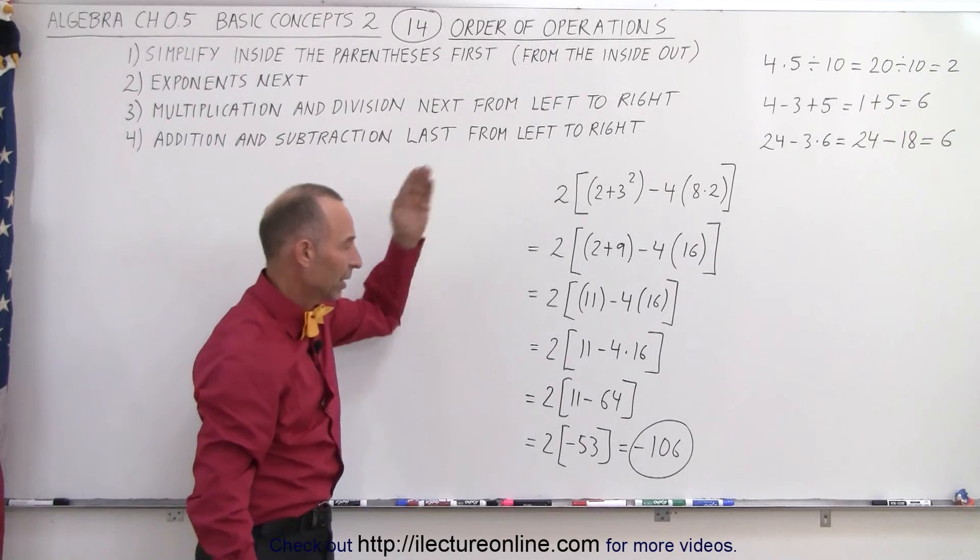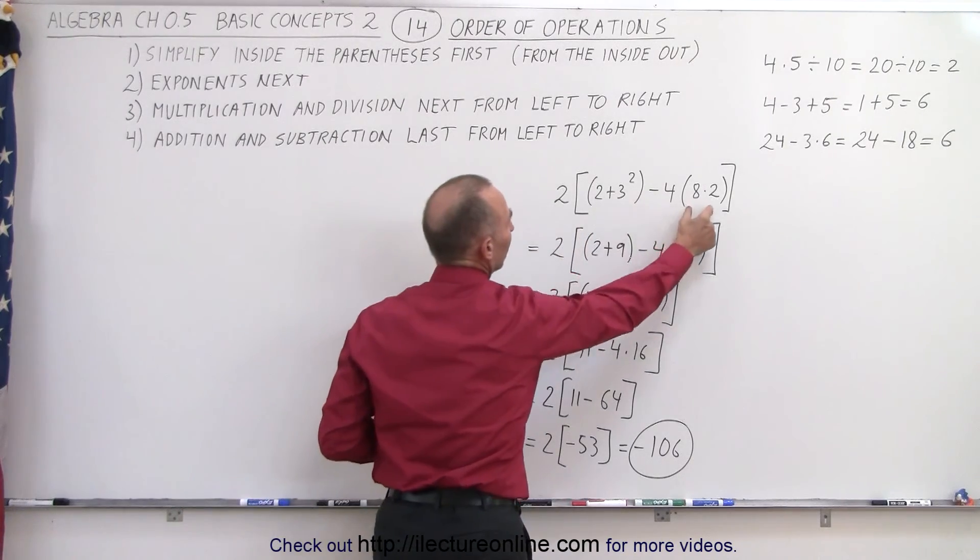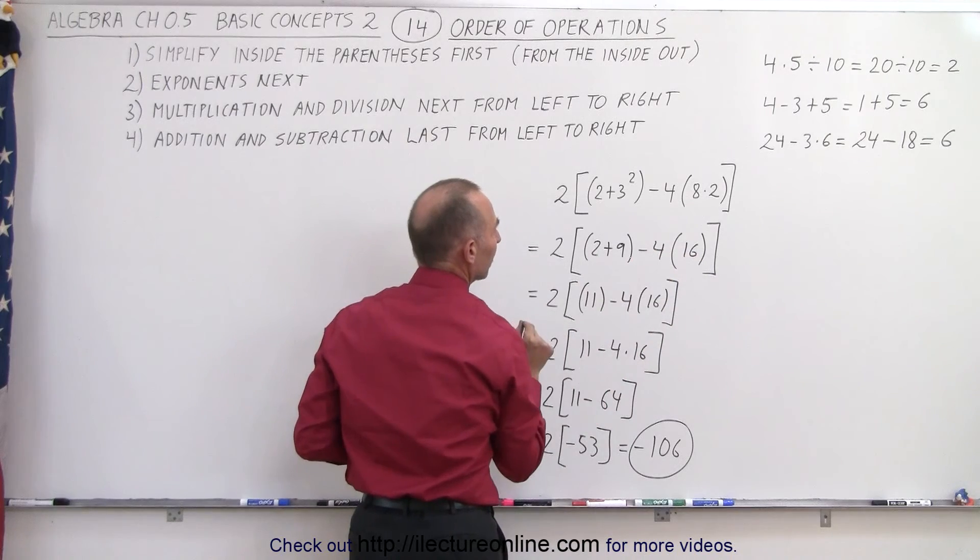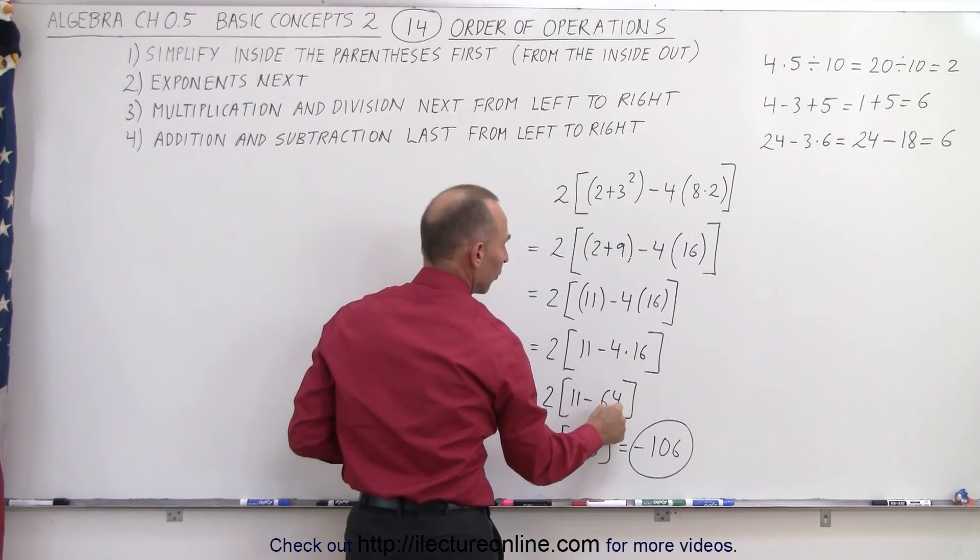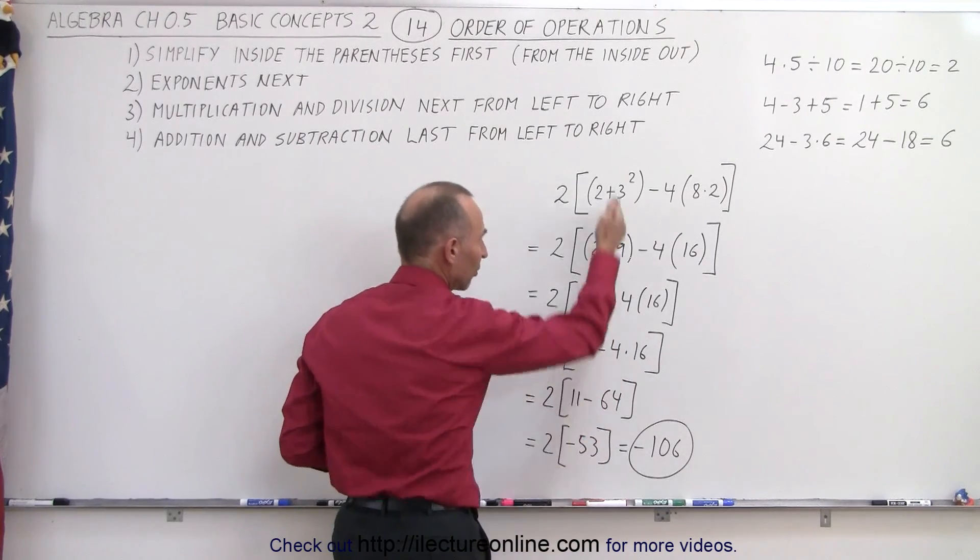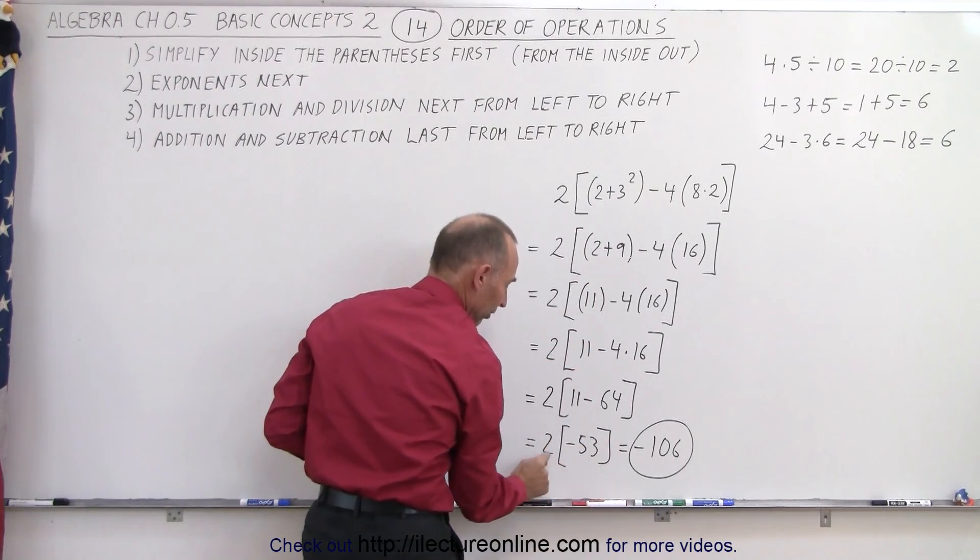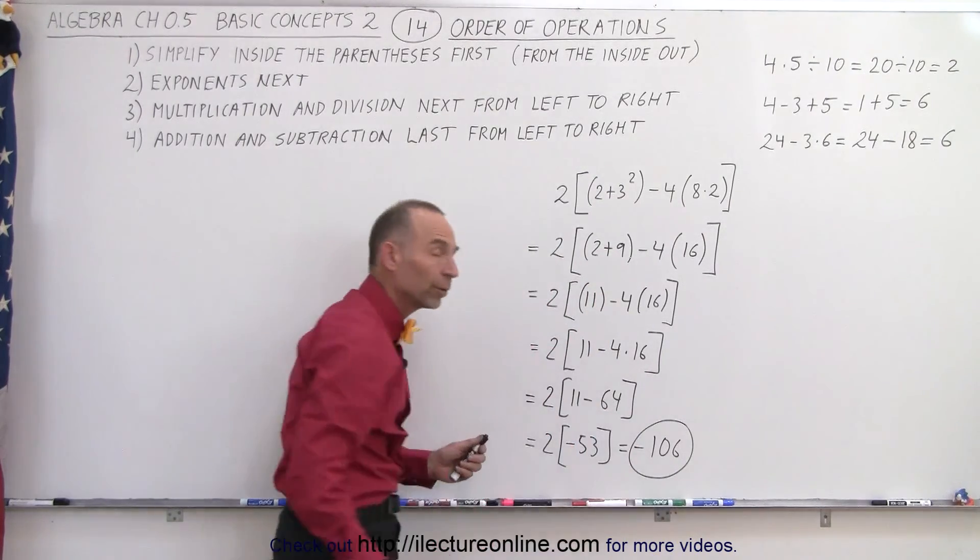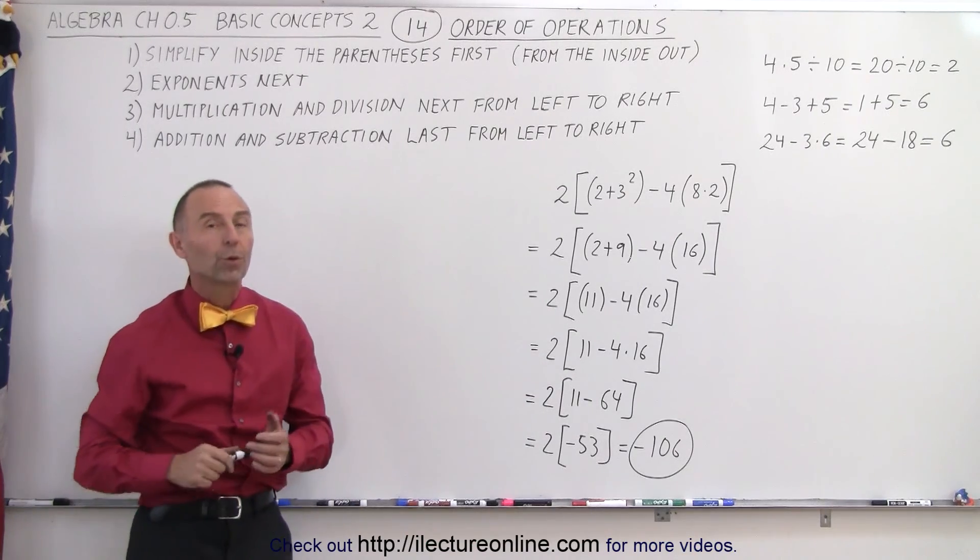So if someone gives you something like this, and they want you to simplify it, again, start with what's inside the parentheses first. Simplify that as much as possible. Then what's next? We do the multiplication before we do the subtraction. And then finally we can multiply this times what's inside the brackets. So we simplify what's inside the brackets before we multiply that final result times 2 to get minus 106. And that is how we're done when we're dealing with order of operations.